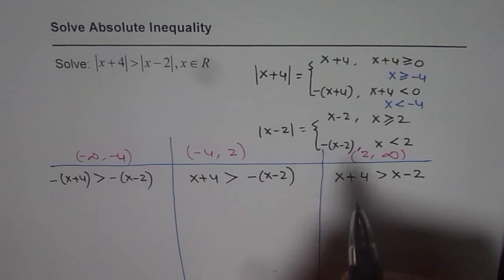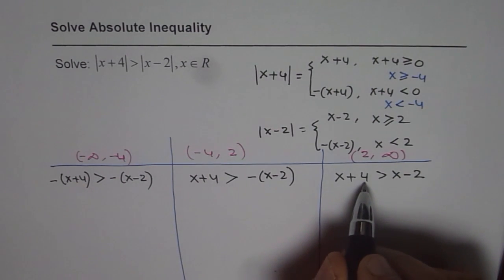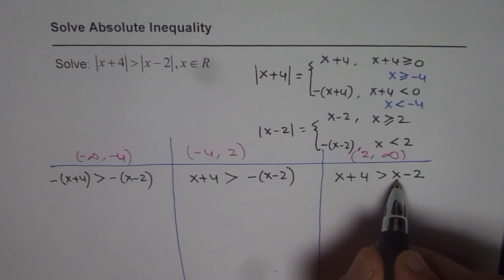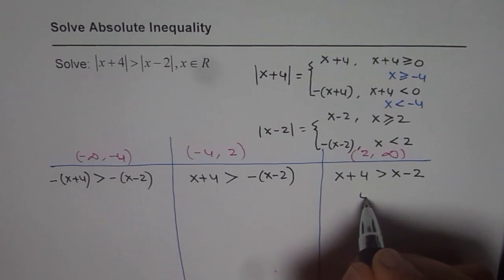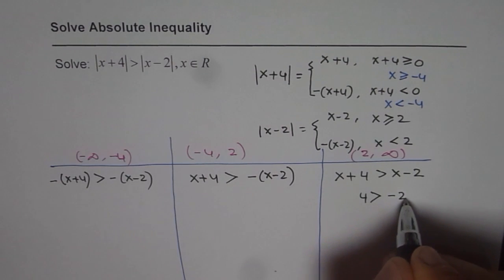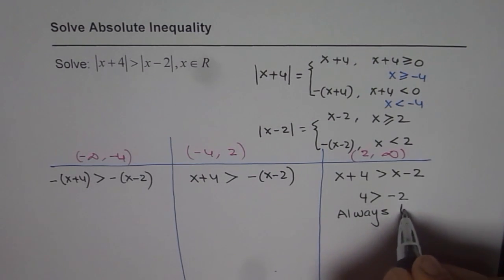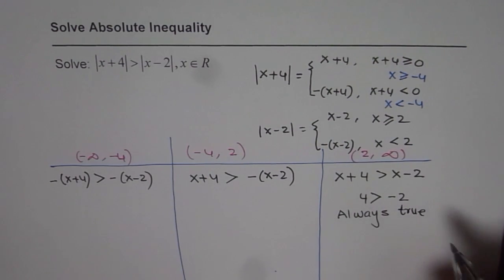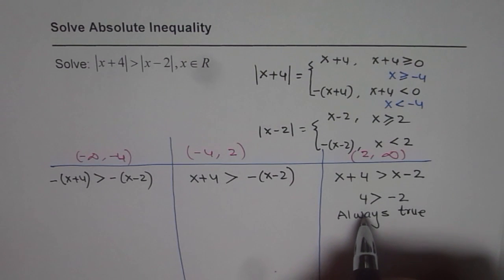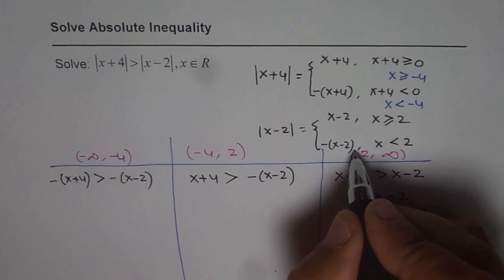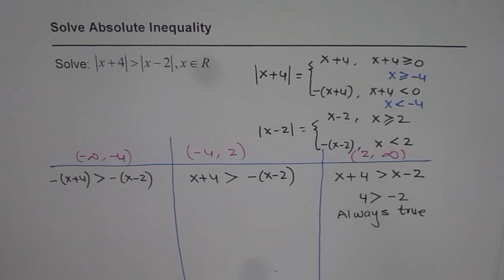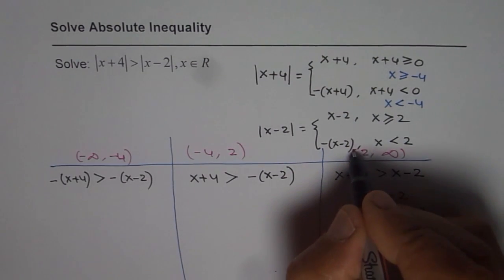Let's start with the interval x greater than 2: x plus 4 greater than x minus 2. Subtracting x from both sides gives 4 is greater than minus 2, which is always true. That means for all x values greater than or equal to 2, the inequality holds, giving us our first solution.